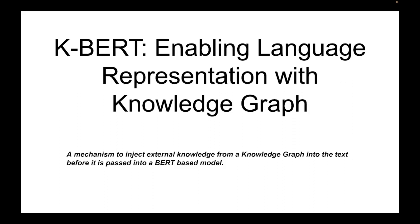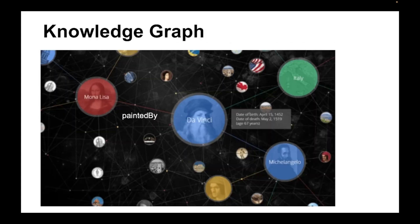Let's see how K-BERT works. Before that, first of all, the knowledge graph, as you know, is like a graph representing knowledge. It has nodes and edges. Nodes represent different concepts and edges represent the relationship between those concepts. So here Mona Lisa was painted by Da Vinci, so Mona Lisa and Da Vinci are the nodes and painted by is the relation connecting those two concepts.